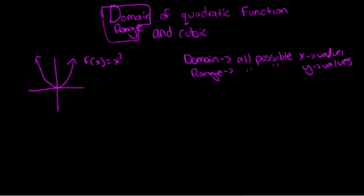We see that this function — when you see these arrows, it shows that it just continues on and on and does not stop. It continues on both sides. So the possible x values, the domain of this function, is x is all real numbers. All real numbers means positive and negative numbers.